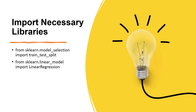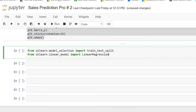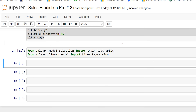First I'm going to import the necessary libraries that will help me use the machine learning concepts of train_test_split and linear regression. I'm inserting my libraries and pressing Shift+Enter. Now the game is on — I can use train_test_split and LinearRegression from those libraries.